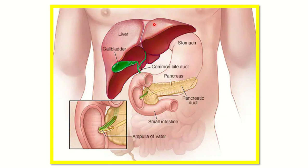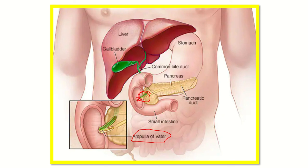Here we can see the liver, gallbladder, and the common bile duct, which drains into the duodenum after joining with the pancreatic duct. On the other side is the stomach, and here the small intestine starts. The ampulla of Vater drains into the duodenum at this point.